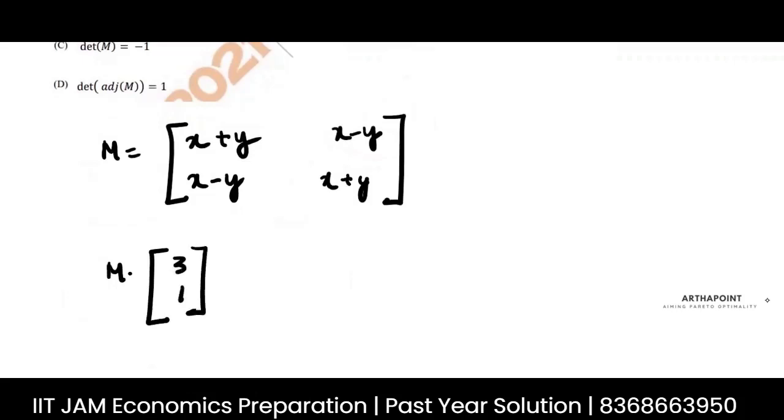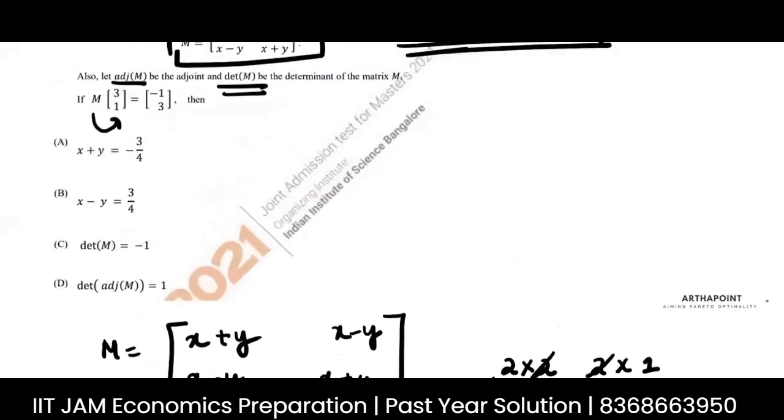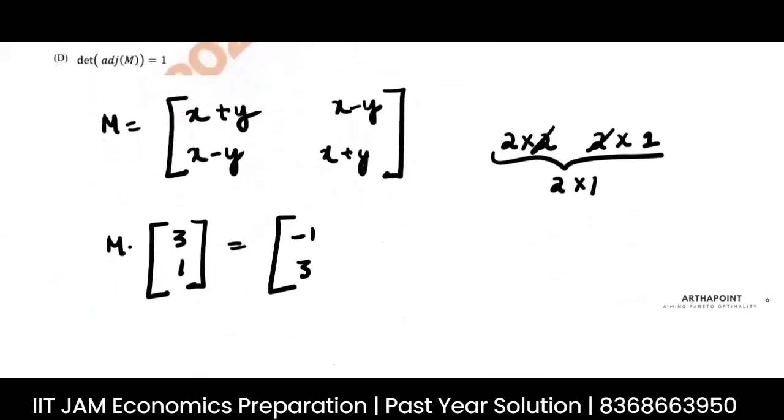Please see this matrix has dimension 2 comma 2 cross 2. The other matrix has dimension 2 cross 1. So what would be the resultant product matrix? 2 cross 1. So this is given to you as minus 1, 3.